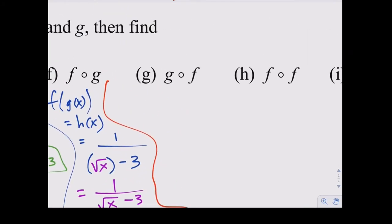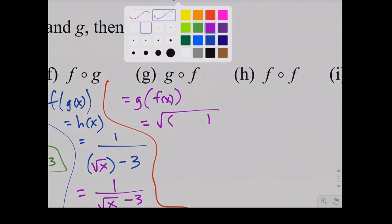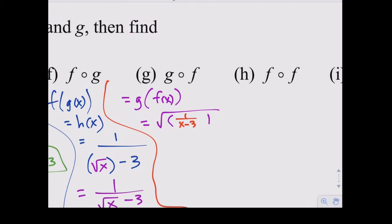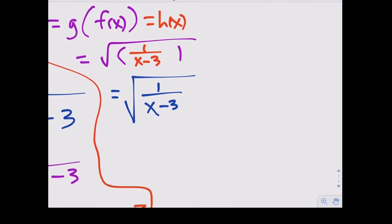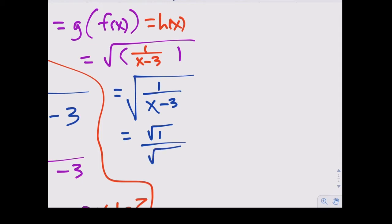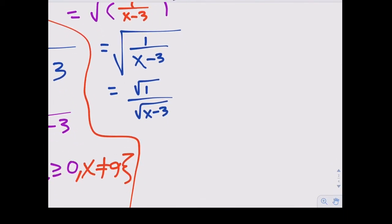Now g∘f: (g∘f)(x) = g(f(x)) = h(x). Our g function is √x, so we take the square root of parentheses and plug in f(x) = 1/(x-3): h(x) = √(1/(x-3)). Simplifying using the property that the square root of a quotient splits: √1 / √(x-3) = 1/√(x-3).